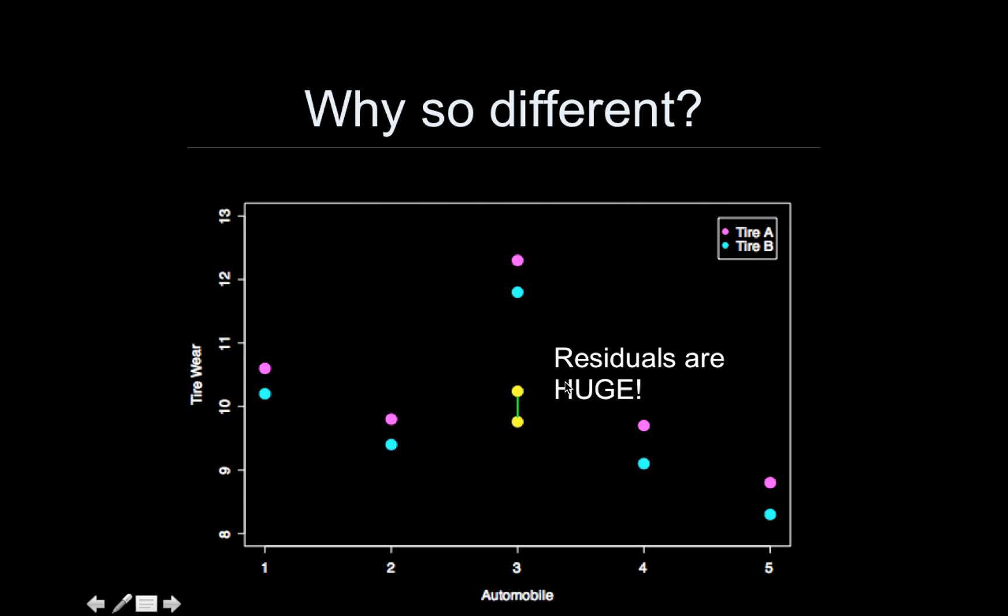The problem is the residuals are huge. We're using a really bad model. To see the residuals here, you have to compare the distance just moving straight up and down to the level of the other pink points. Here there's a big distance. The distance from here to this pink point, that's pretty big. The other ones are a little smaller. Likewise, the blue points have some pretty big differences. The residuals are really big because we haven't accounted for the fact that each of these cars was driven by a different driver.